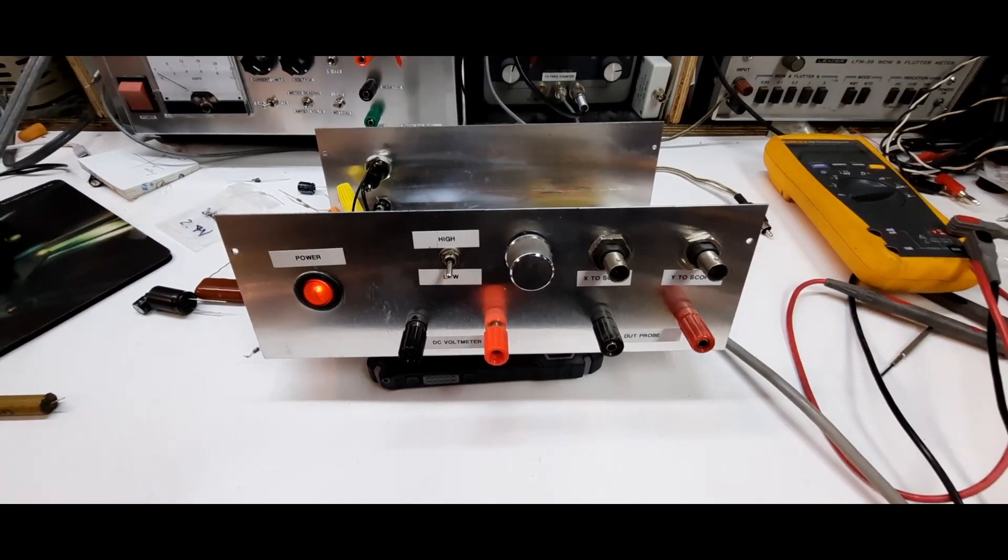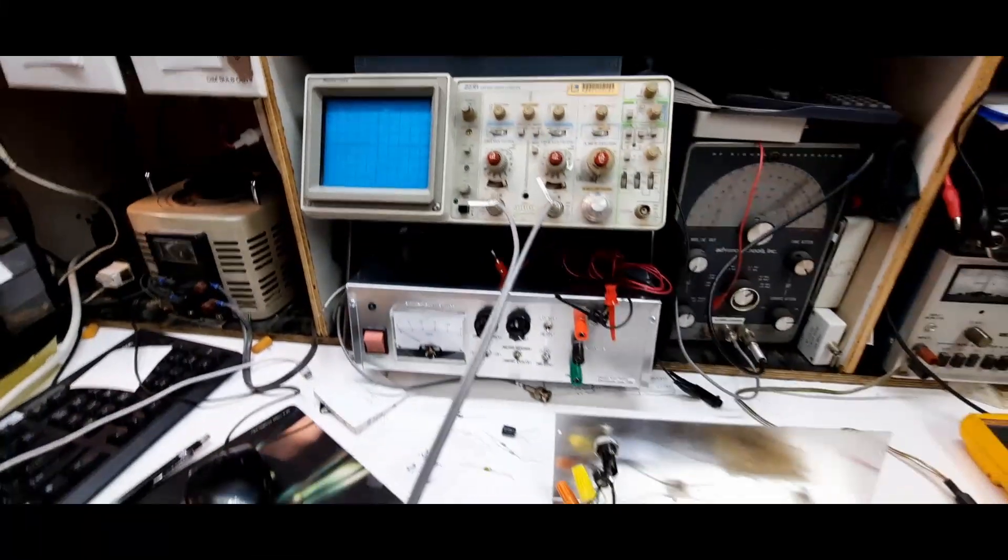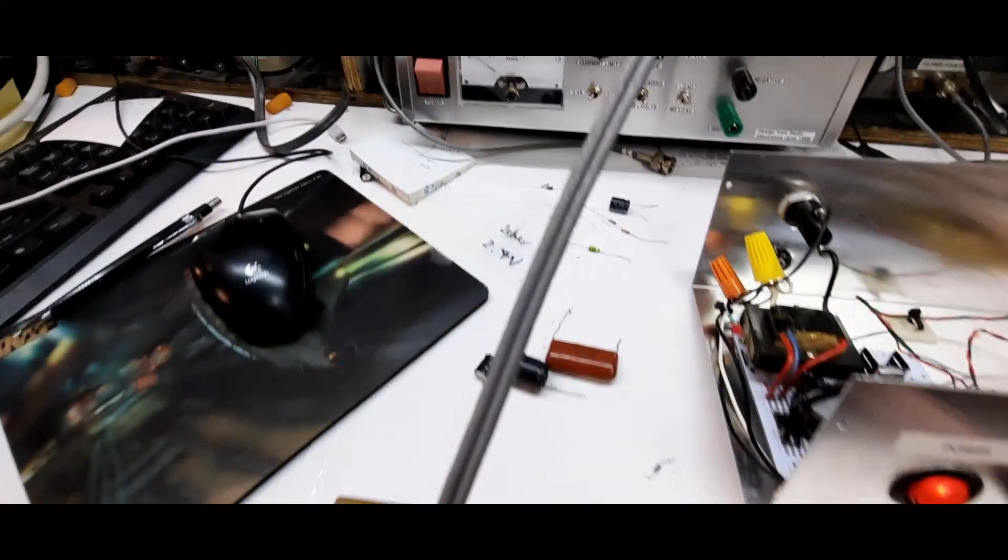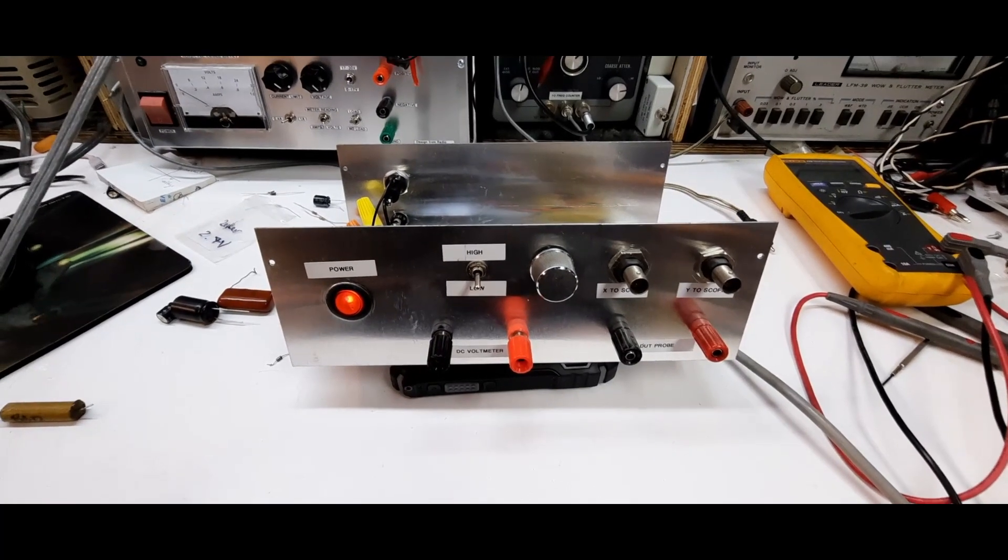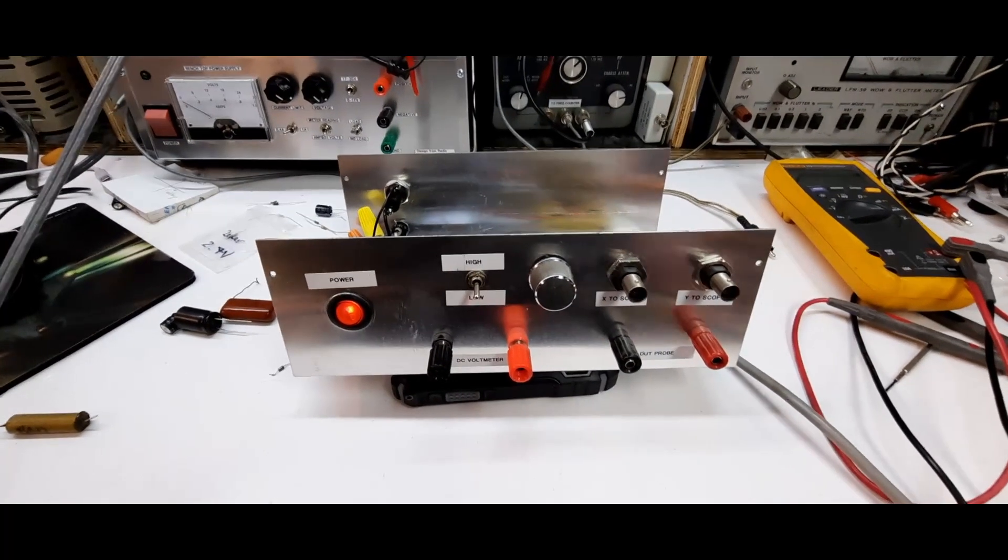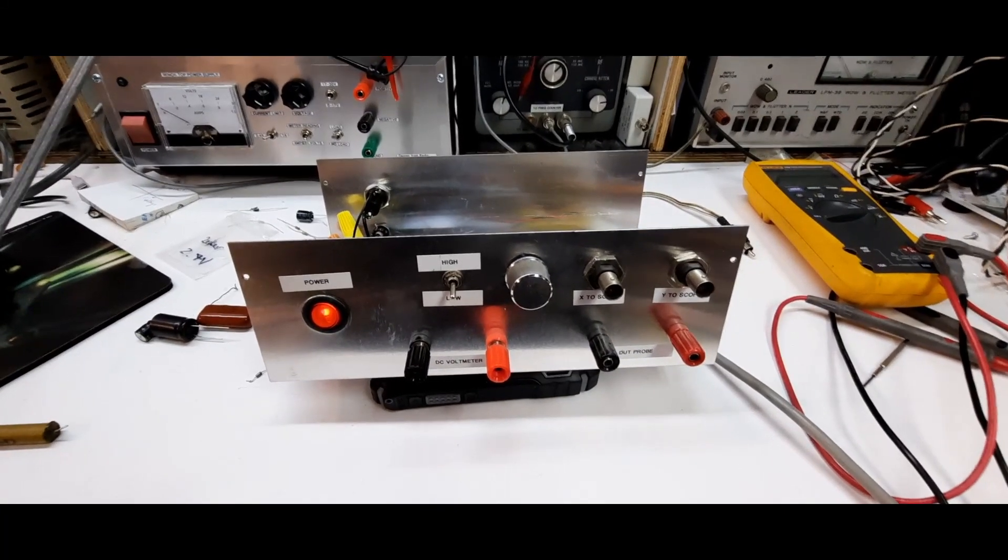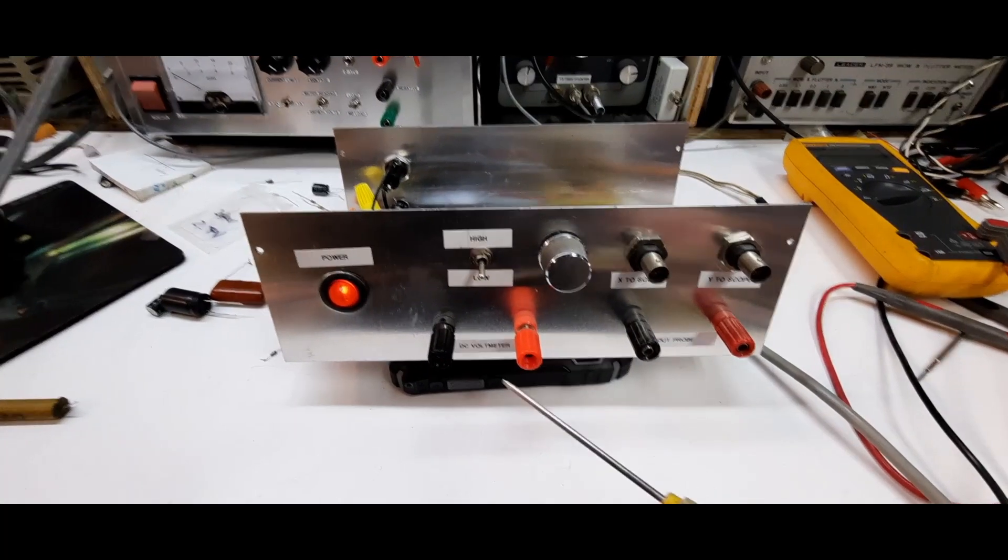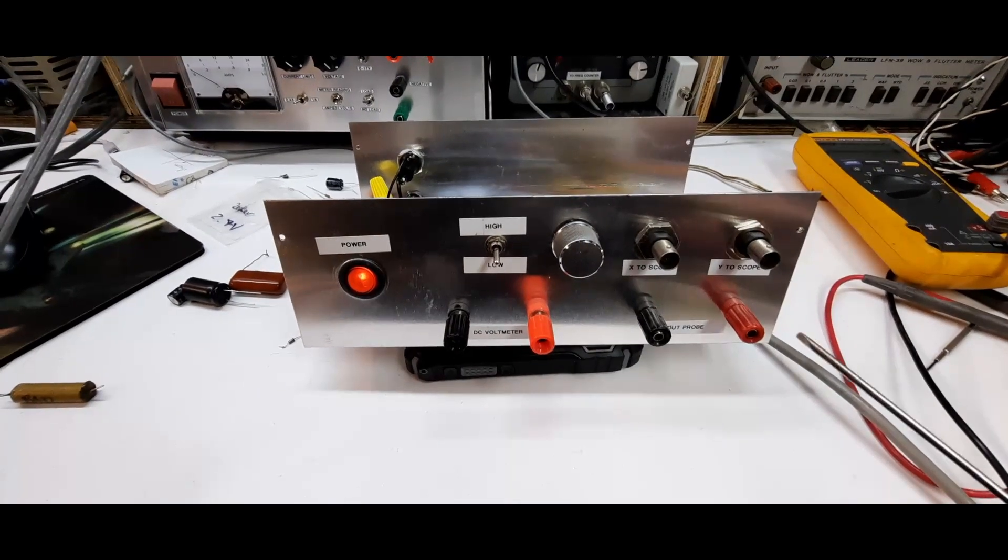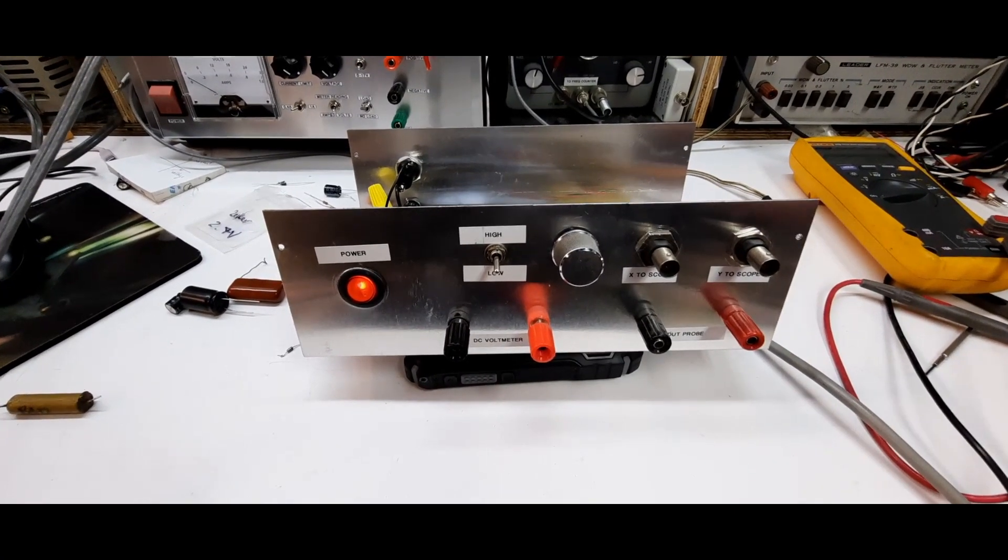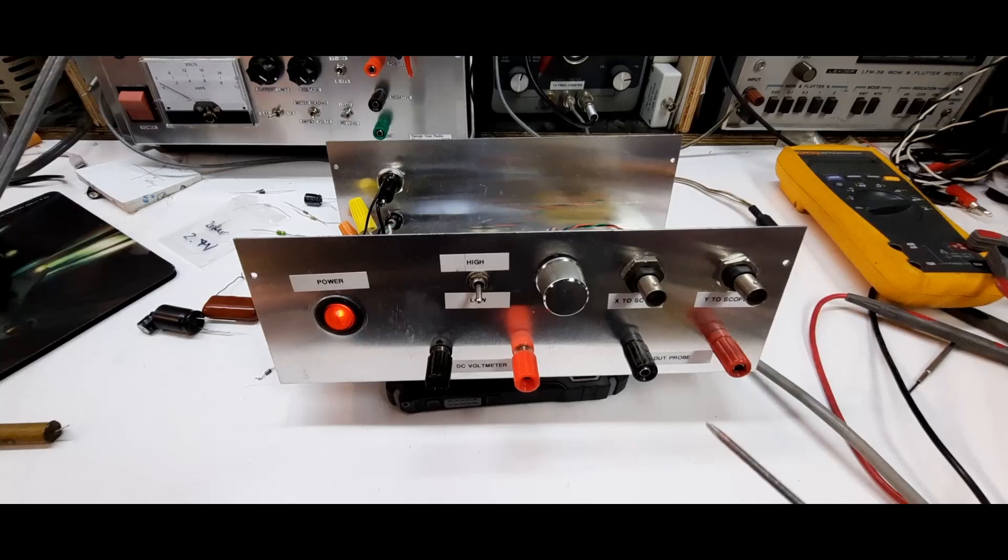So this curve tracer is going to show us on an oscilloscope using the XY terminal connections signature traces of components like capacitors, diodes, zener diodes, etc. We can get an idea of what they look like just by looking on the scope. Obviously we're not going to get critical measurements, but we're going to be close enough.